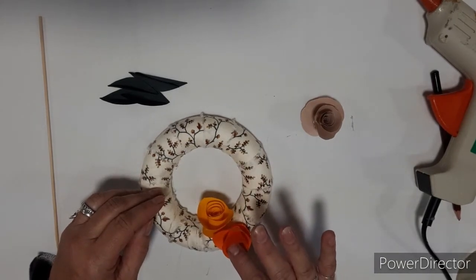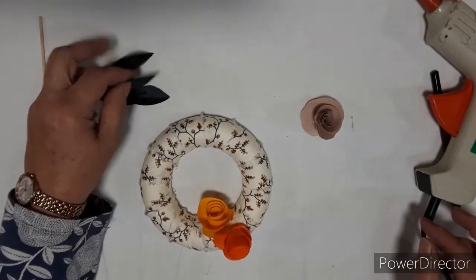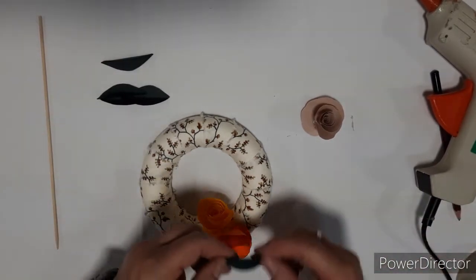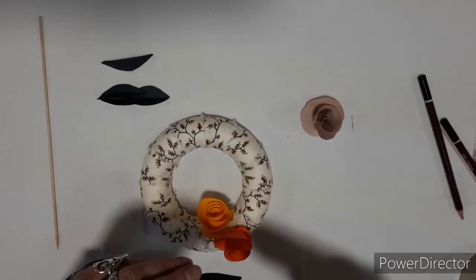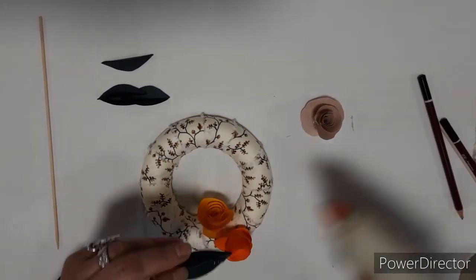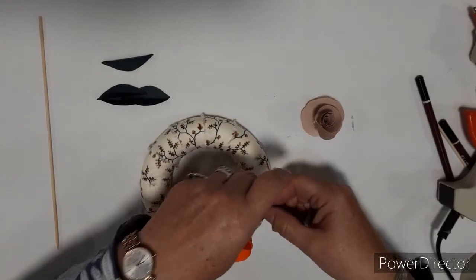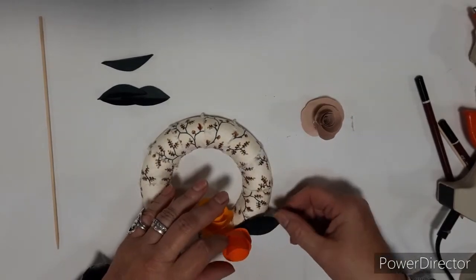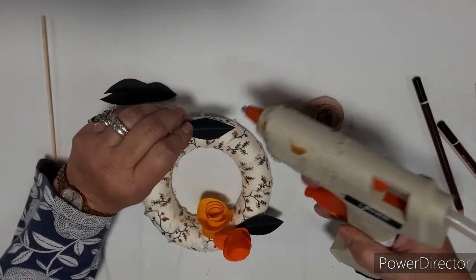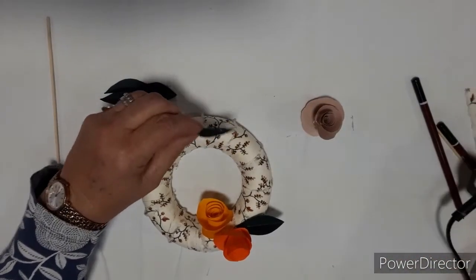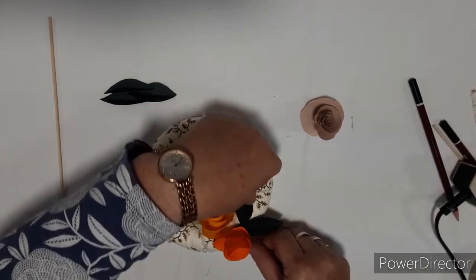So just a simple design and then take a leaf. Work out where you want it. Pop up a glue. And then just secure that in. And just carry on working up your design. It can be as simple or as complicated as you want to make it.